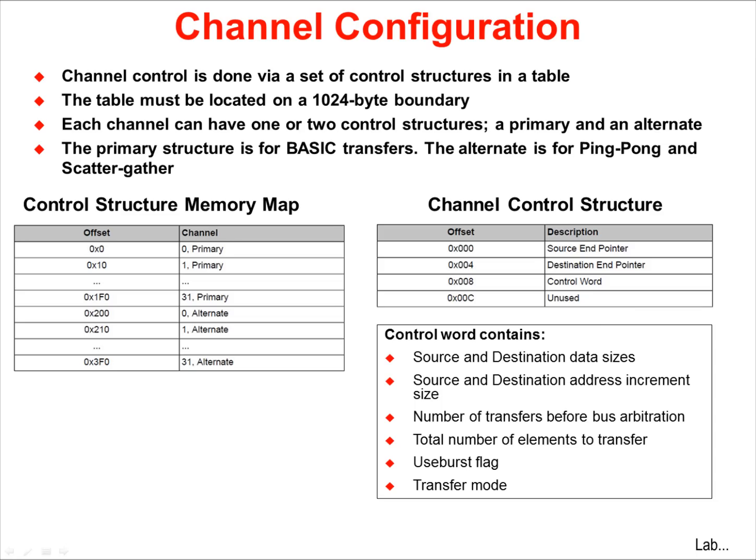Note the channel control structure in the figure on the right. Contained within the structure is the source and destination pointers and a control word. The control word contains the source and destination data sizes, the source and destination address increment sizes, the number of transfers to be performed before bus arbitration can occur, the total number of elements to transfer, a flag to indicate whether or not to use burst transfers, and finally what transfer mode to use.